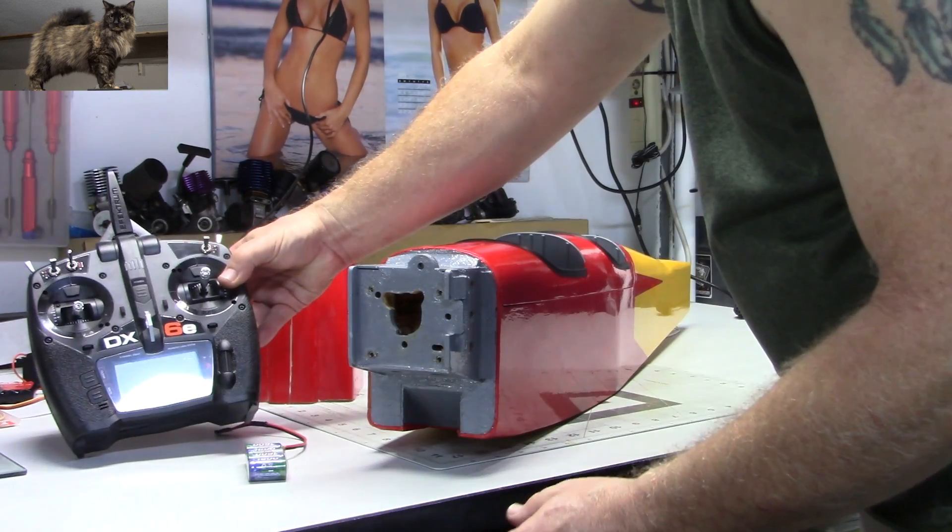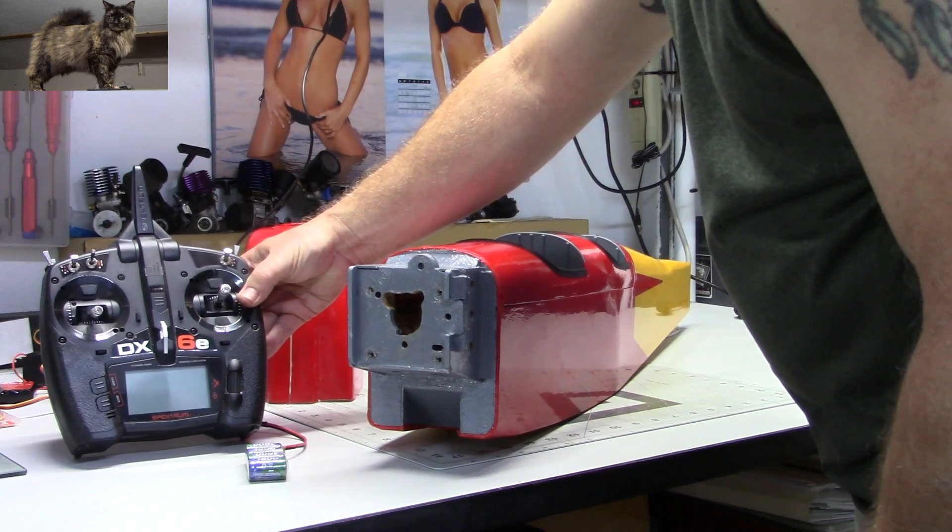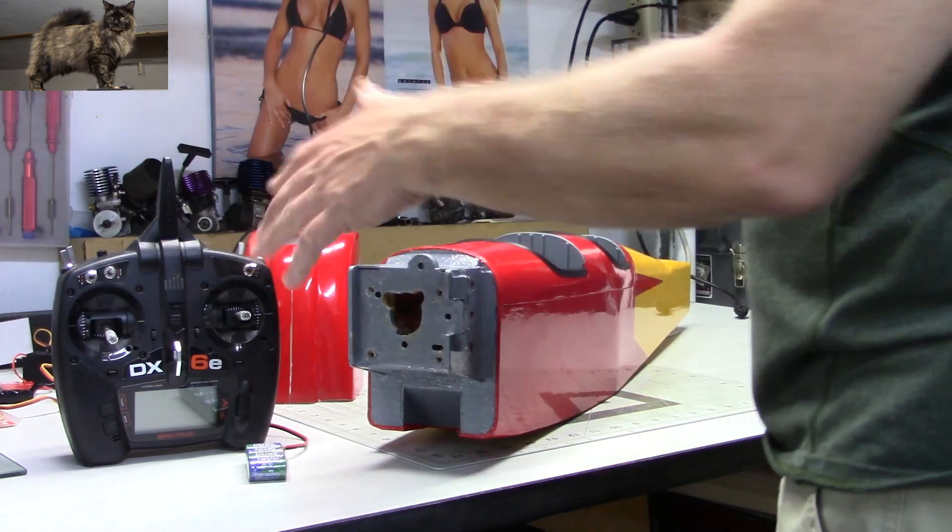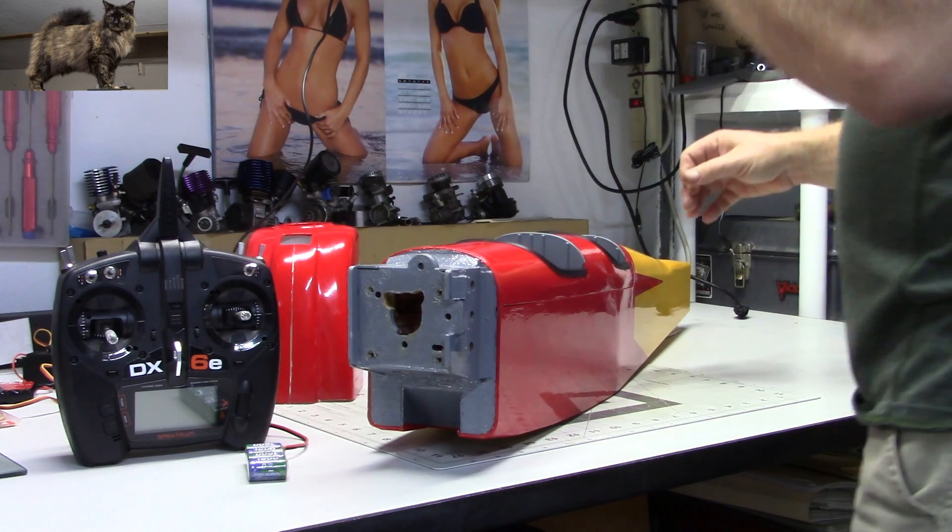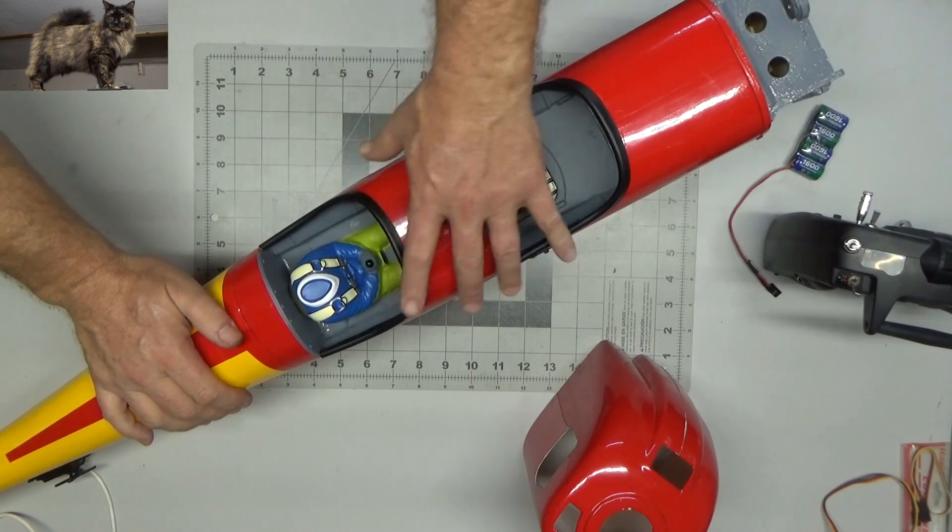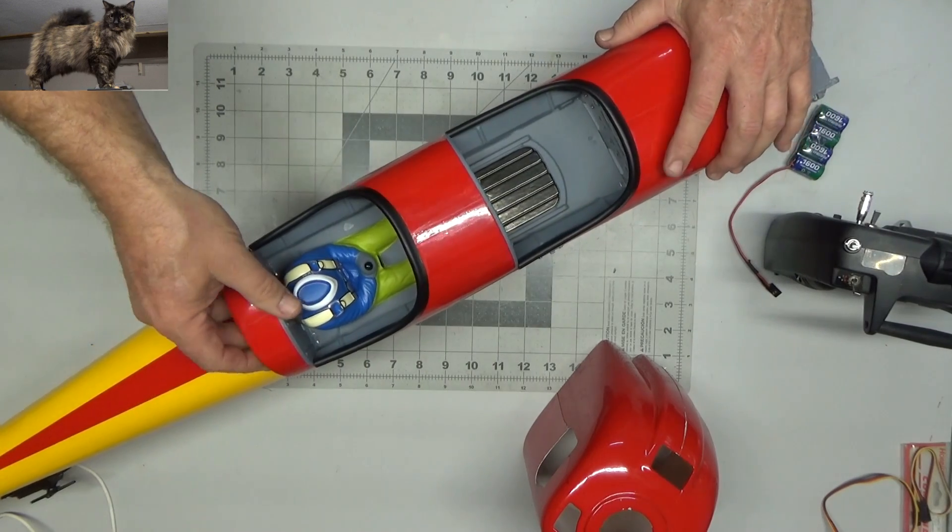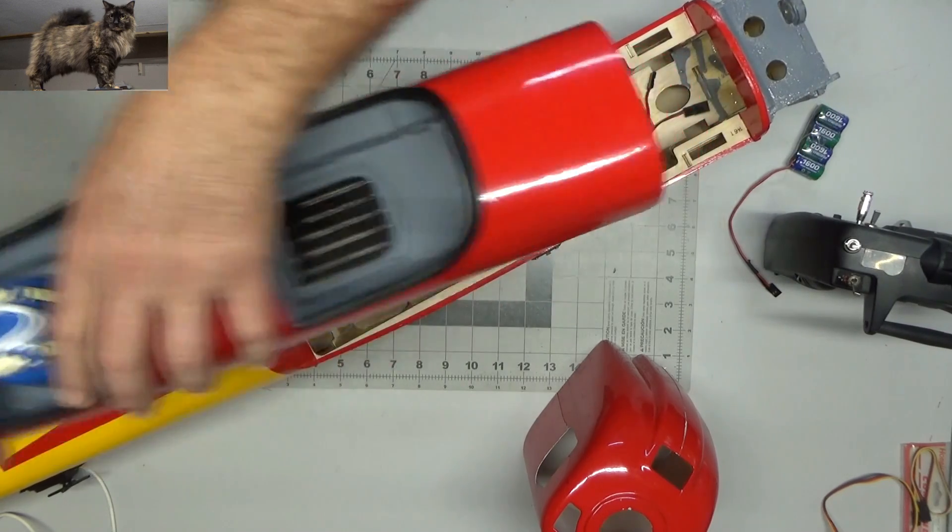You'll see here I've got a DX6E Spectrum transmitter. This is actually the radio I'm going to be using in this plane. So the majority of the other things I did today were within here.